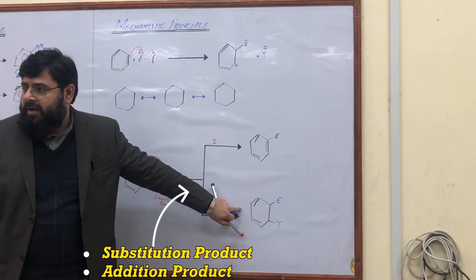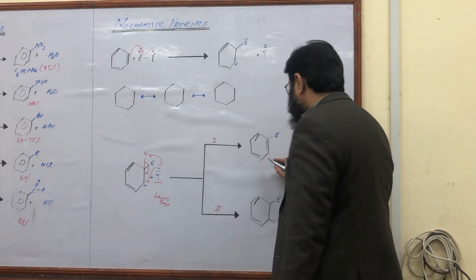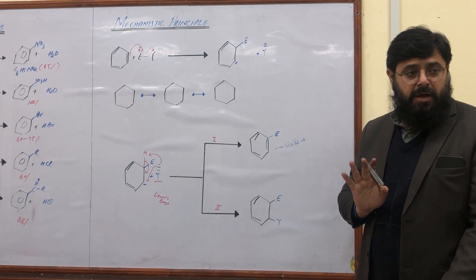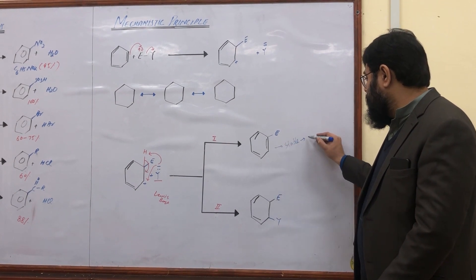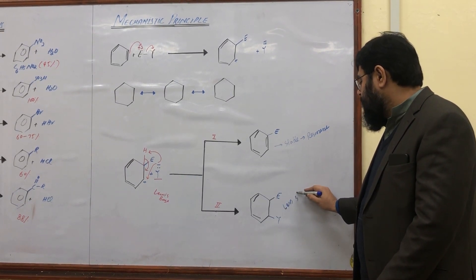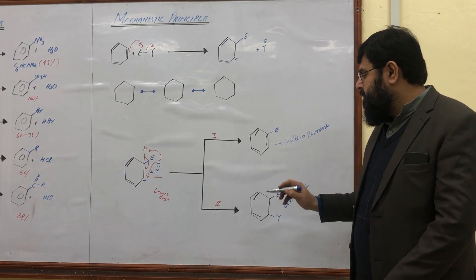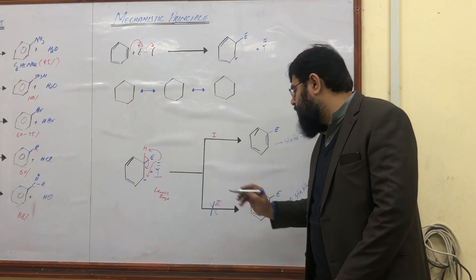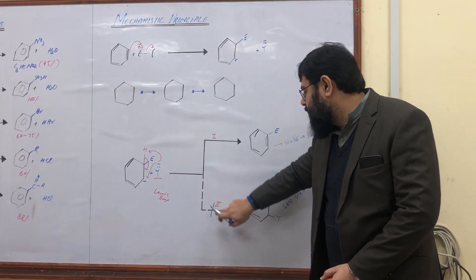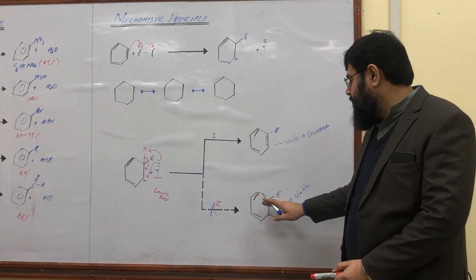Comparing the two products: the substitution product is more stable because it retains the resonance or aromaticity of the benzene ring. The addition product is less stable because the complete resonance of the pi electronic cloud in the ring is disrupted. Therefore the addition route is not followed due to the lesser stability of its product, and we cross out this route as a shaded or disfavored pathway.